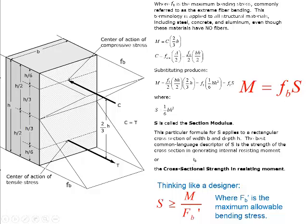S is called the section modulus — we also call it the cross-sectional strength in resisting moment. Now if we're going to think like designers, we have to ask ourselves what we're trying to get at. Typically we've already decided the spans, ascertained the loads, can figure out the moment, and know something about the materials available. That tells us what section modulus the beam needs to have. So we say S must be greater than or equal to the moment divided by F sub B prime.